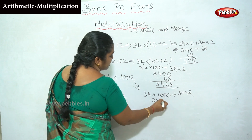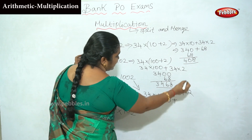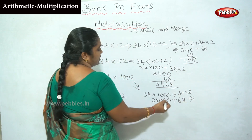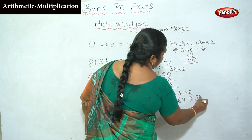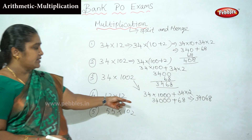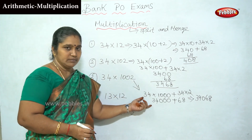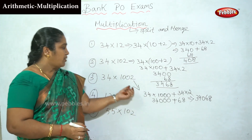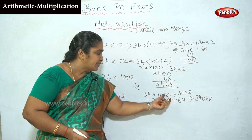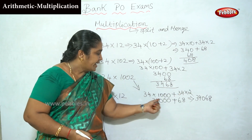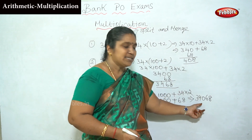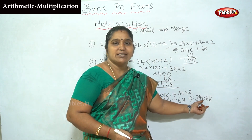34 into 1000: insert three zeros, so it equals 34,000. Plus 34 into 2, which equals 68. Total answer is 34,068.